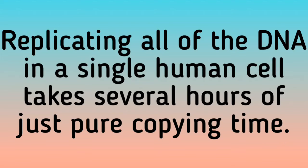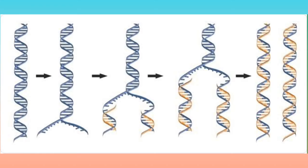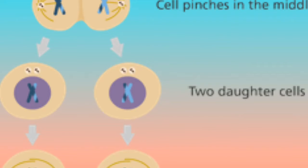Replicating all of the DNA in a single human cell takes several hours of pure copying time. At the end of this process, once the DNA is all replicated, the cell actually has twice the amount of DNA that it needs. The cell can then be divided and the DNA parceled into the daughter cells, so that the daughter cell and the parental cell, in many cases, are absolutely genetically identical.